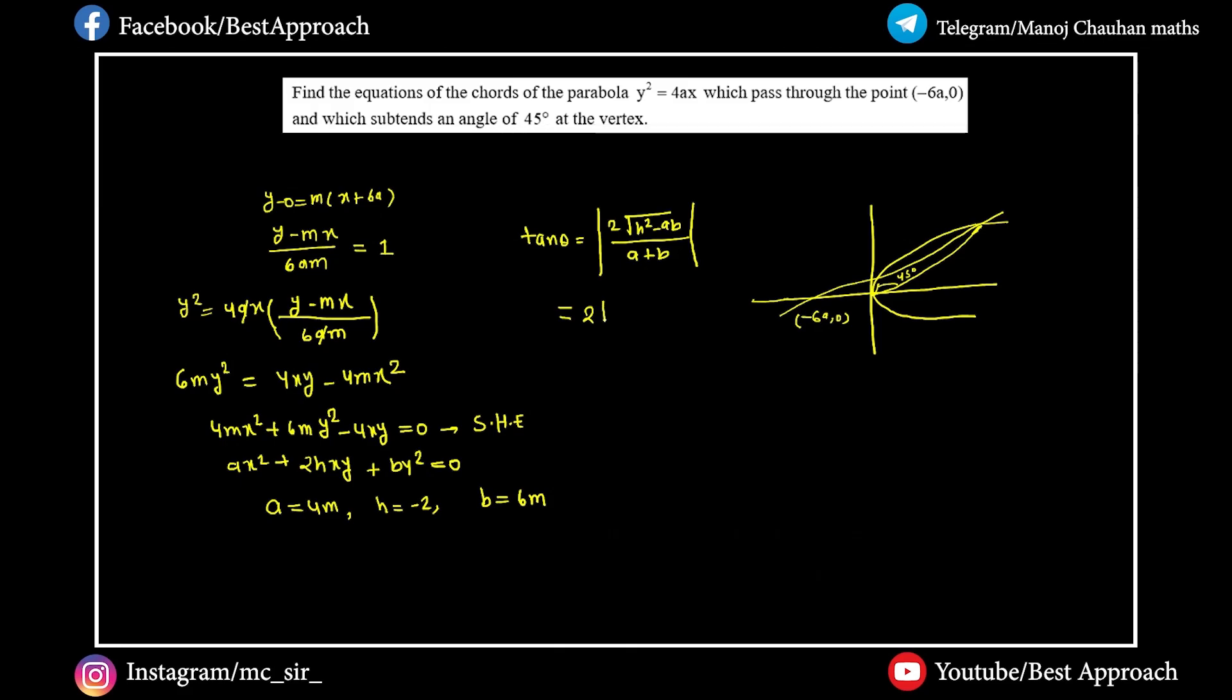Now we have to put values. What is the value of h? h²=4 minus 24m². What is the value of a+b? It's -m²+6m. And what is the value of the angle? 45.